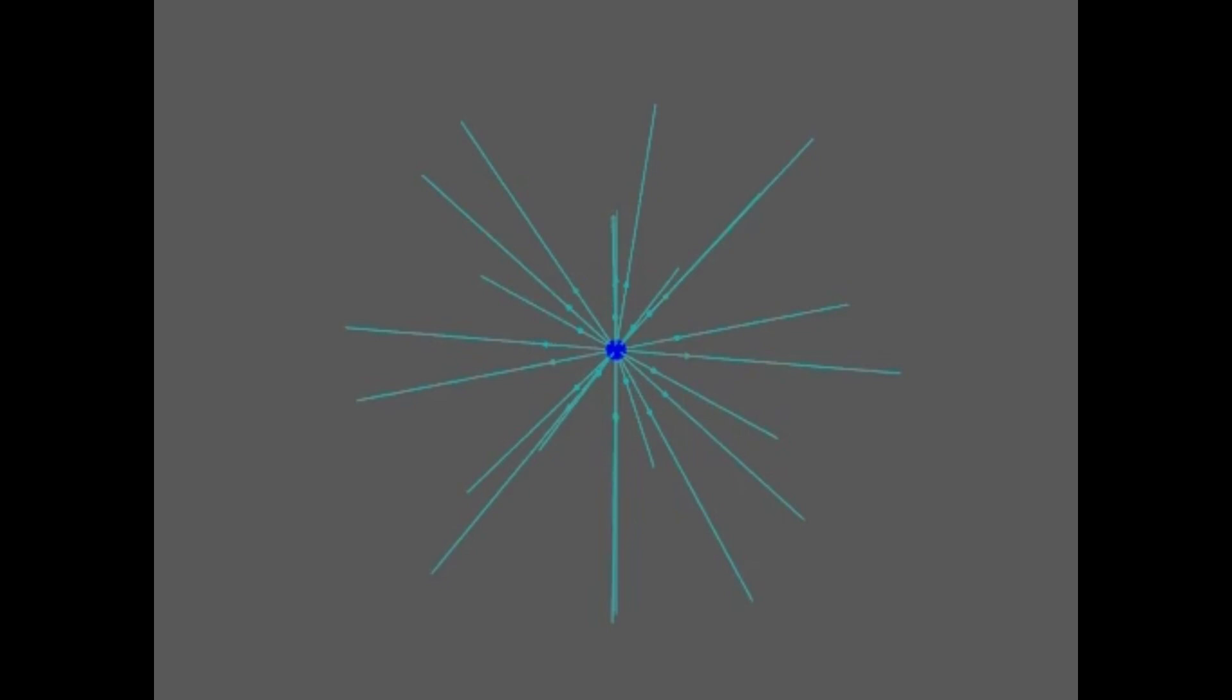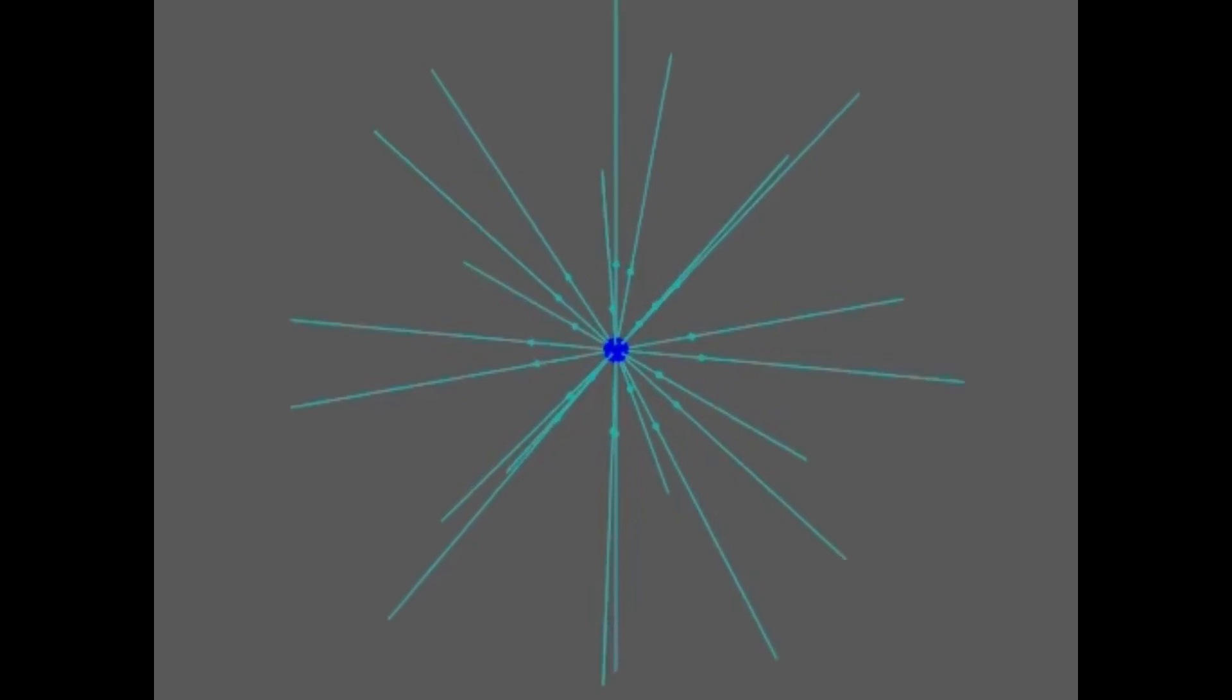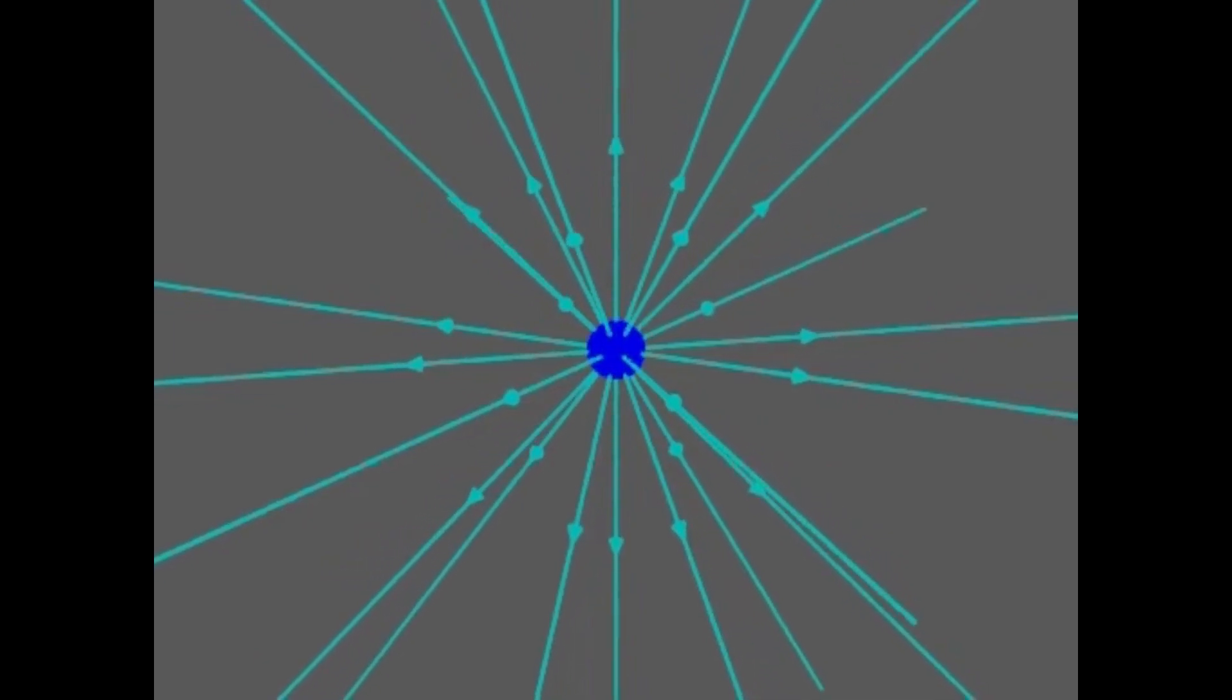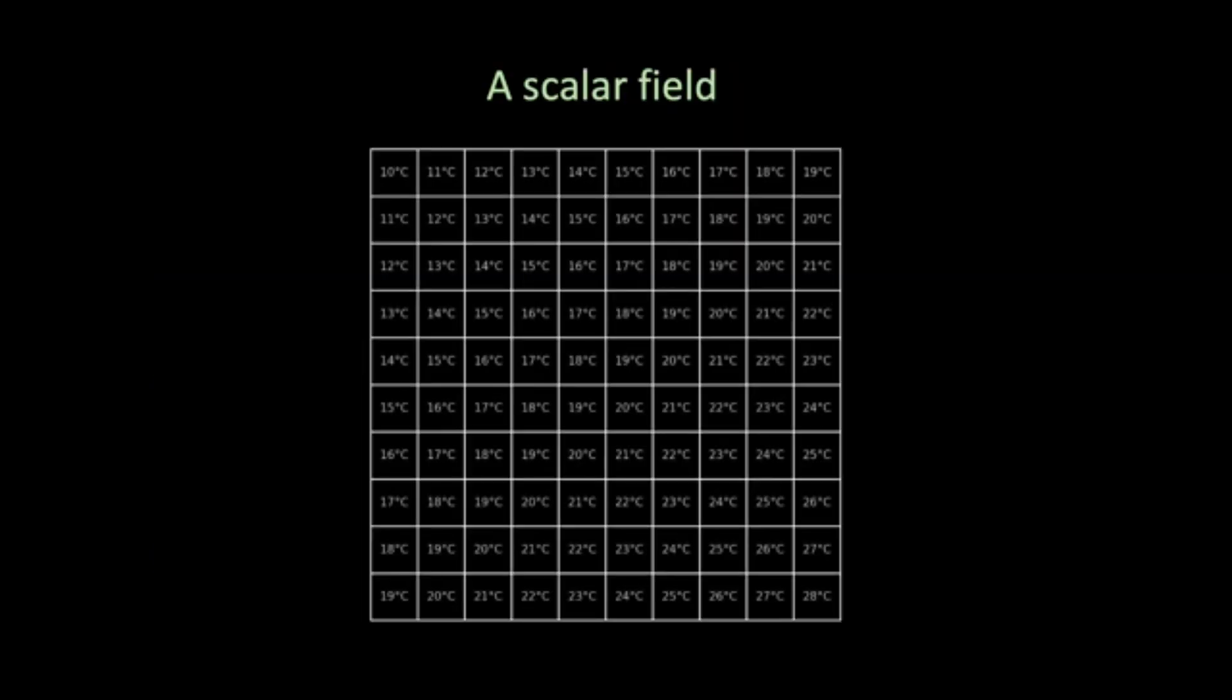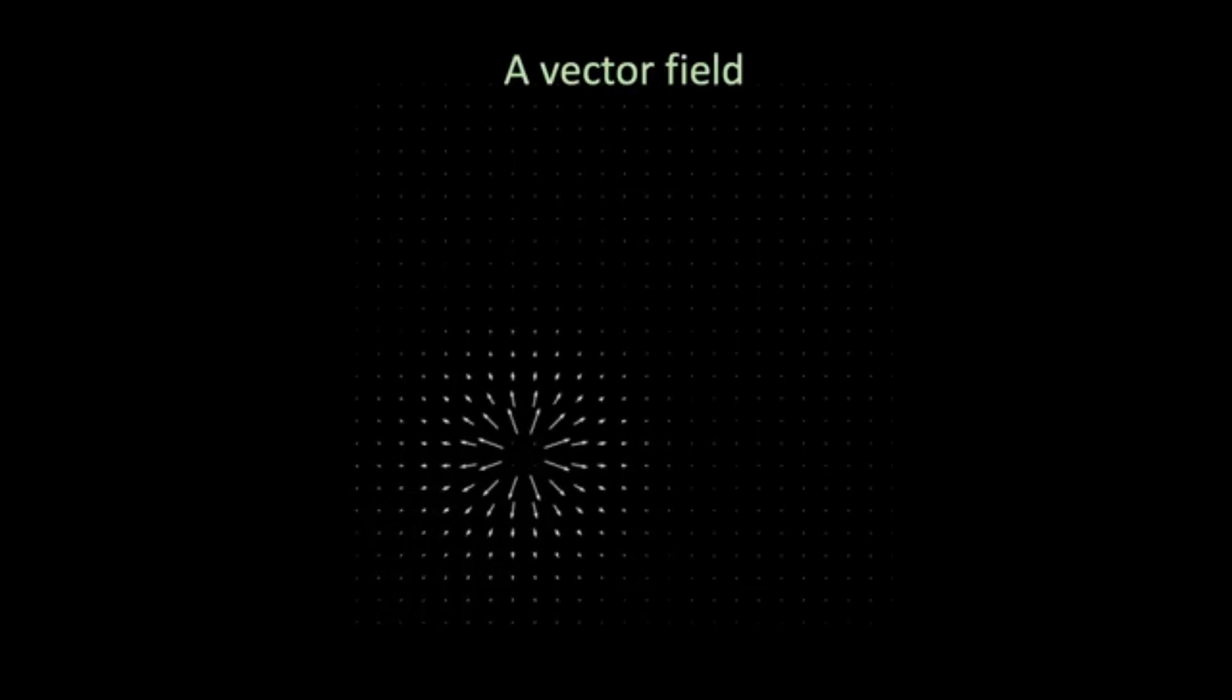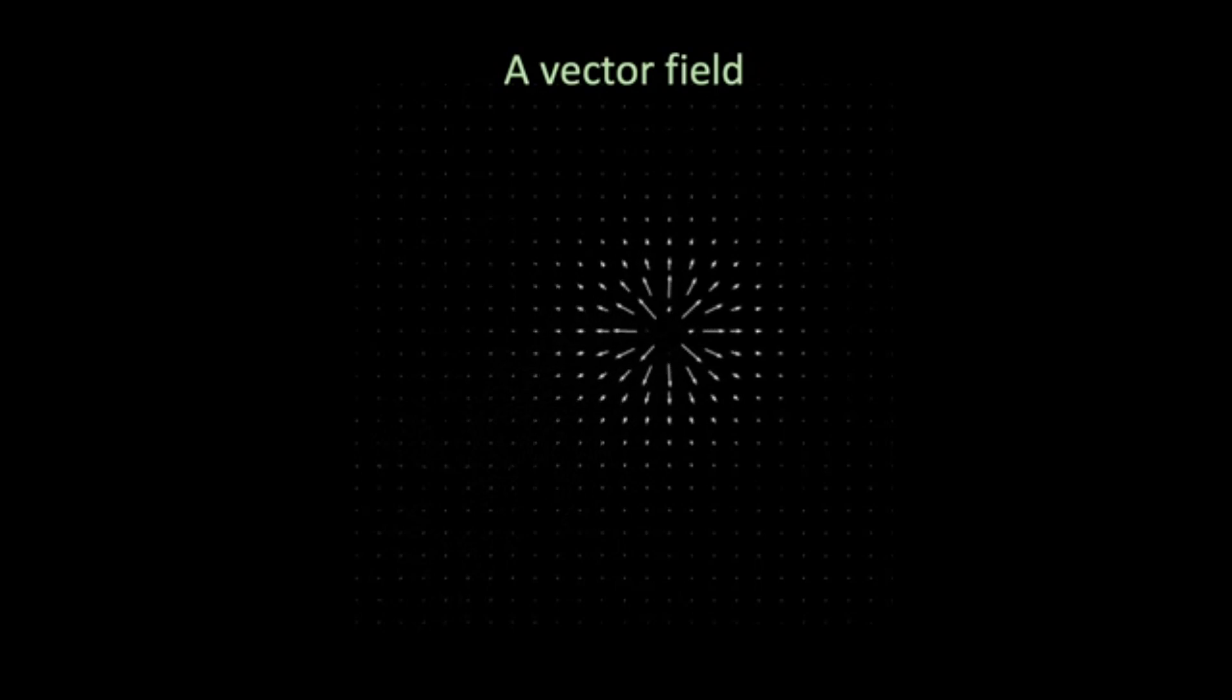In the simplest terms, a field is something that assigns a value to every point in space and time. Let's take this for example. If you measure the temperature in every part of a room, that is a scalar field, just a number at each location. If you measure the wind, which has both direction and speed, that is a vector field.